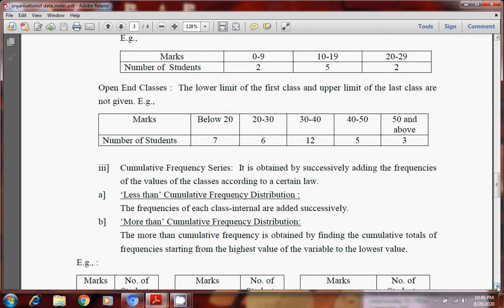Then open end classes. Open end classes kahan se hote hain? Which are not having any like below limit and the upper limit. Like here we are writing below 20. How much below 20? Nothing is specified. So it is an open end series. Similarly for the last value also, last value here, 50 and above. 50 and above means no limit, any value can be there. So this is called open end series.